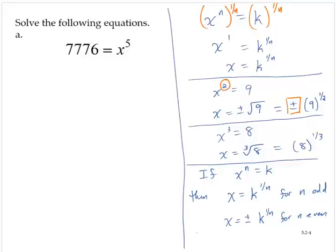So let's consider this example. 7,776 is equal to x to the fifth. Notice that the exponent on x is odd. So therefore, x would be equal to 7,776 to the 1 fifth power.